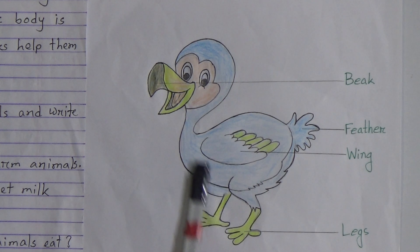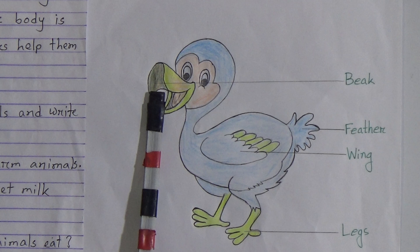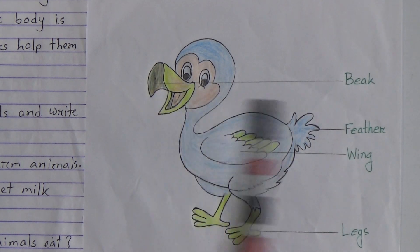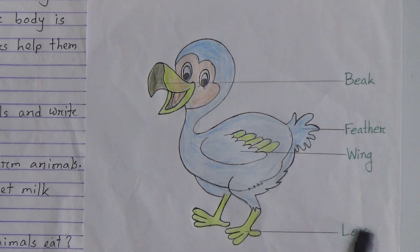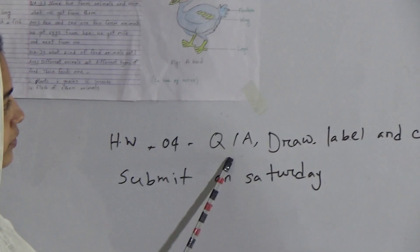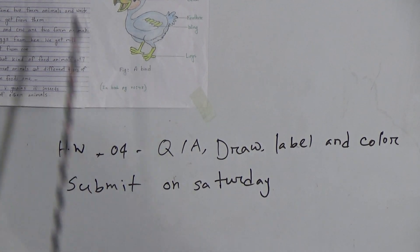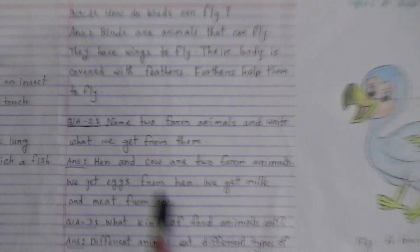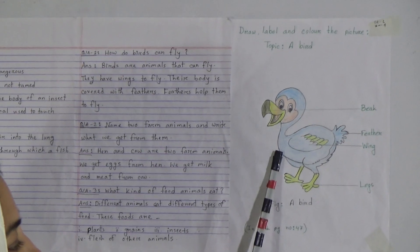Draw this figure first, then label and then color. This one is the beak, this is feather, this one is wing and this one is legs. Your today's HW number is 4. Your HW topic is question answer and draw, label and color the picture. You have to do this question answer and draw, label and color the picture as your HW and submit it on Saturday.